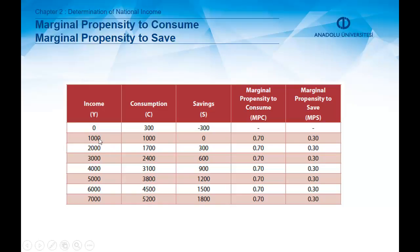For example, if our marginal propensity to consume is 70%, that means when there is a change of 1,000 in income, there is a change of 700 in consumption. Marginal propensity to save shows that a 1,000 change in income produces a 300 change in savings. As I said, since income is either consumed or saved, the sum of MPC and MPS must always equal one.